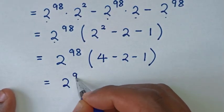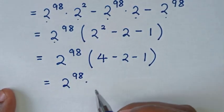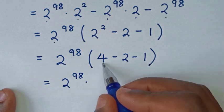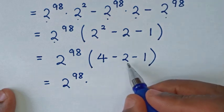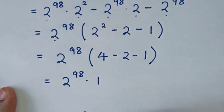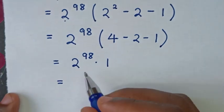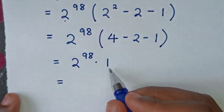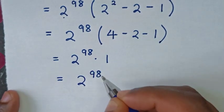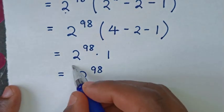It will be equal to 2 power of 98 times the result inside the bracket: 4 minus 2 is 2, and 2 minus 1 is 1. So it equals 2 power of 98 times 1, which is simply 2 power of 98. Therefore, this is our final answer.